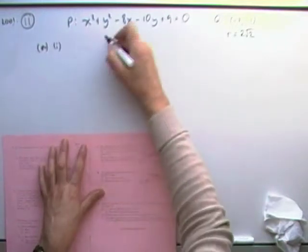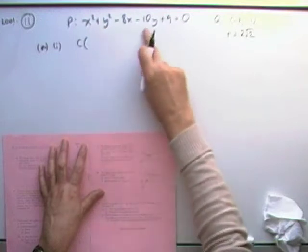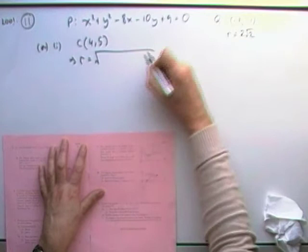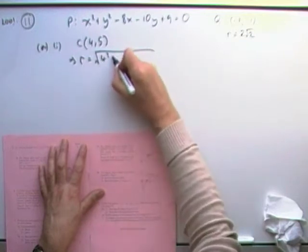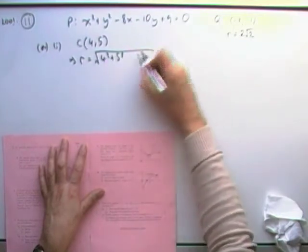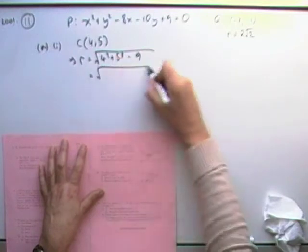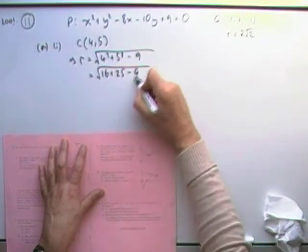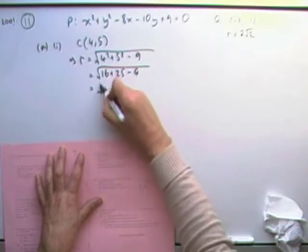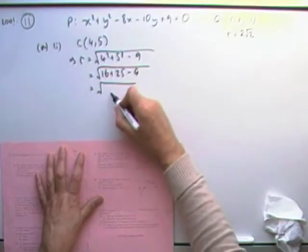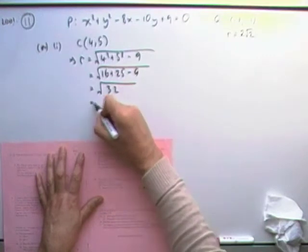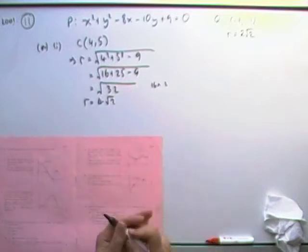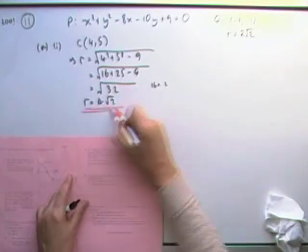So the radius of the first circle is 4 root 2. Well, you know the centre straight away. I know the centre's going to be 4, 5. So I can go ahead and say the radius is going to be the square root of 4 squared plus 5 squared, take away the number at the end. So it's going to be the square root of 16 plus 25, take away the 9. So that's going to be 32. Now 32 is 16 times 2, so that's 4 root 2. So that was the first bit.